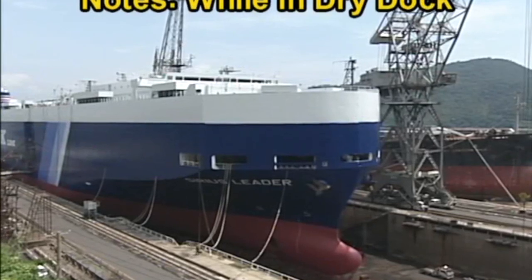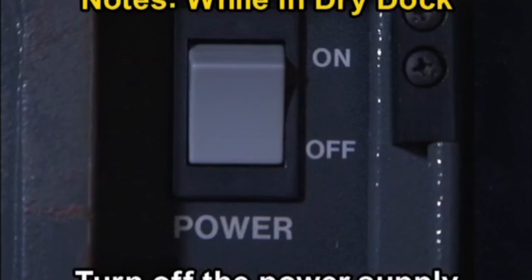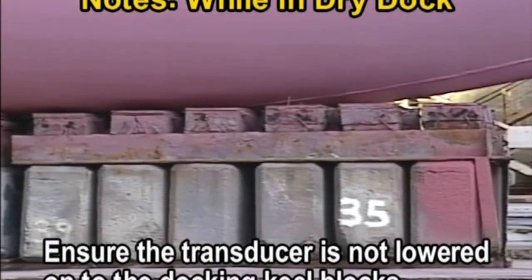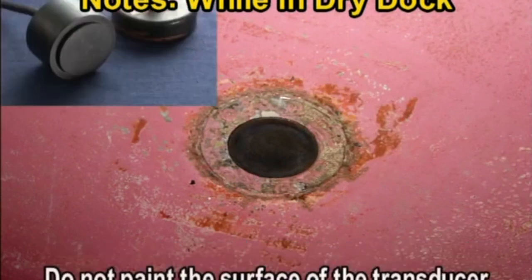Precautions to be taken when in dry dock include turning off the power supply, ensuring the transducer is not lowered onto the docking keel blocks, removing crustaceans adhering to the surface of the transducer, and ensuring that the surface of the transducer is not painted.